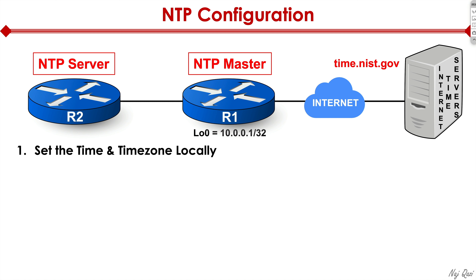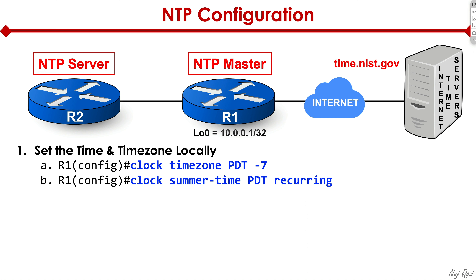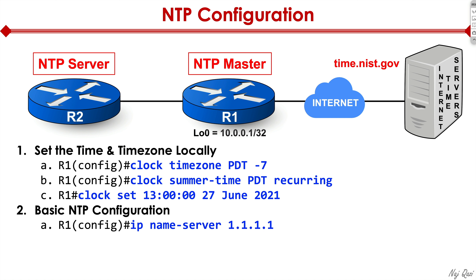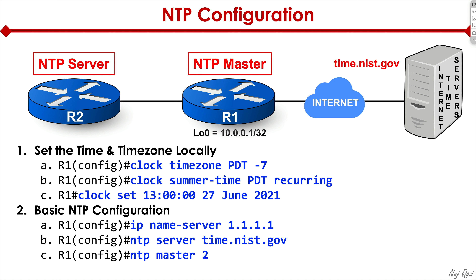Here are the steps to configure our devices. First, we specify the time and time zone locally. On R1, we say 'clock timezone PDT' for Pacific time zone with daylight savings, negative seven. We then say 'clock summertime PDT recurring' to specify we're observing daylight savings time. We specify the exact time with 'clock set 1300, 27 June 2021.' We then do a basic NTP configuration, specifying our name server — in this case the Cloudflare DNS server — and the NTP server, which is time.nist.gov. We then turn R1 into NTP master, specifying stratum level 2.